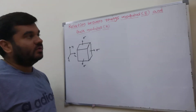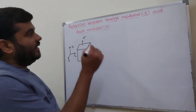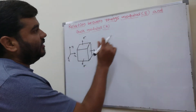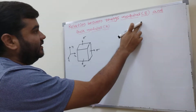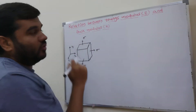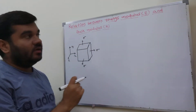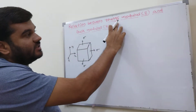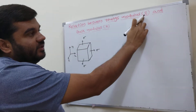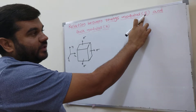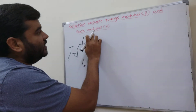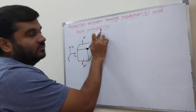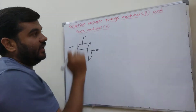In this video, we will derive the relation between Young's modulus and the bulk modulus. Young's modulus is denoted by E and bulk modulus is denoted by K.